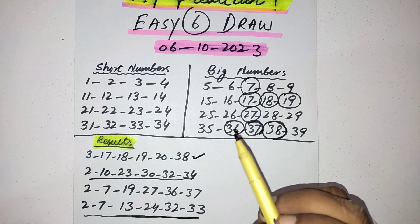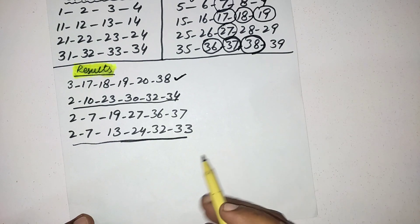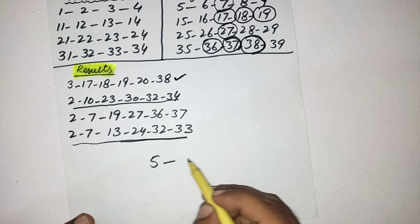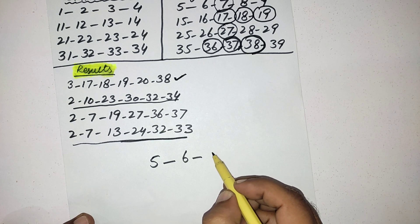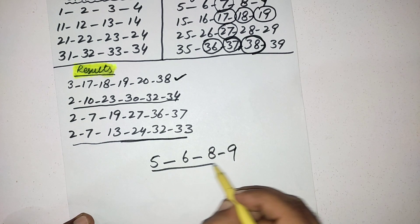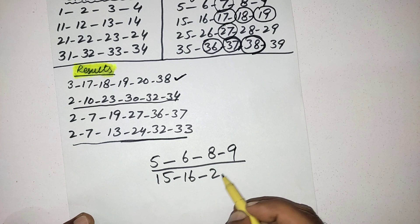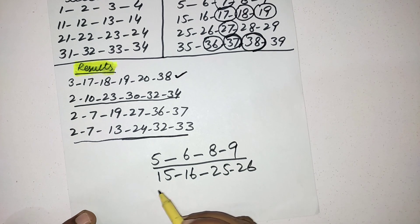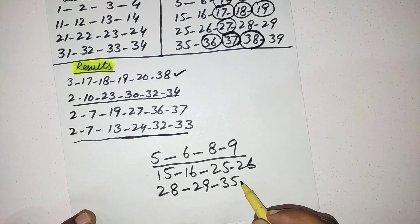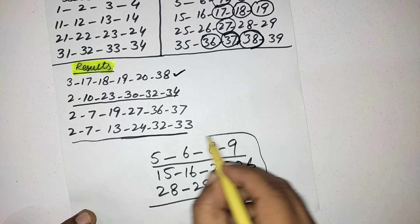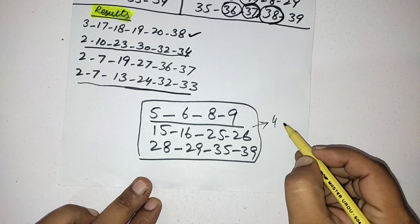From big numbers the remaining numbers you can see I'm writing here: 5, 6, 8, and 9, 15, 16, 25, 26, 28, 29, 35, and 39. Friends, these are remaining big numbers. You should select from big numbers, you should select from here at least 4 or 5 numbers for this draw.